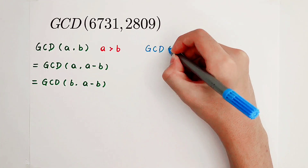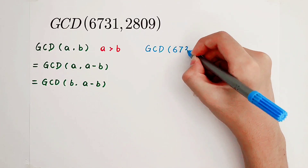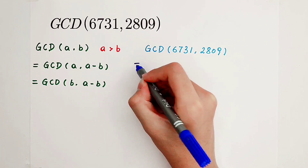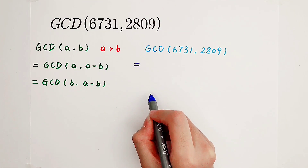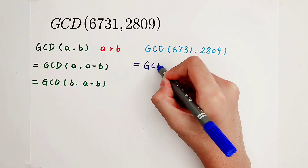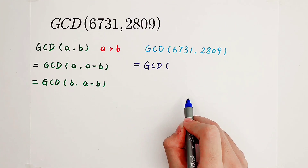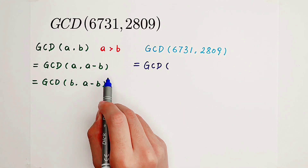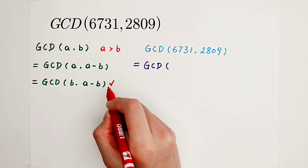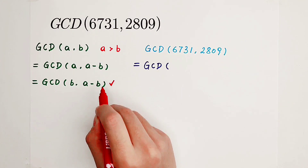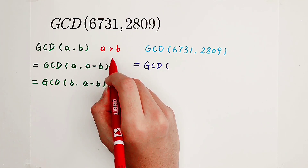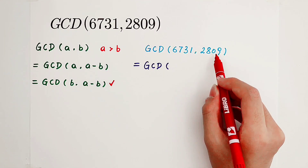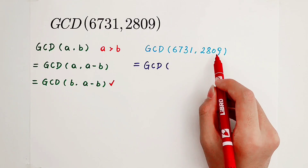The greatest common divisor of 6731 and 2809. Look carefully at what I'm gonna do. Since we have two equivalent forms, which one should we use? I'm gonna choose the second formula — GCD(B, A minus B) — because B is smaller than A. We all like small numbers and we hate huge numbers. A is now 6731 and B is 2809, so that's why we should choose the second formula.